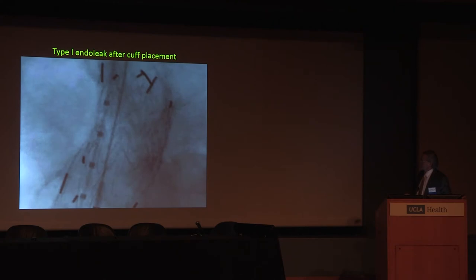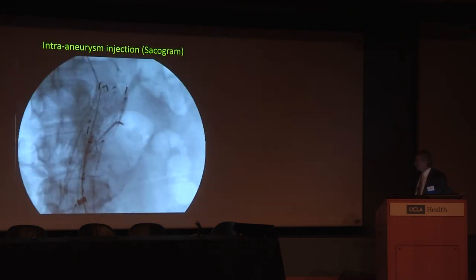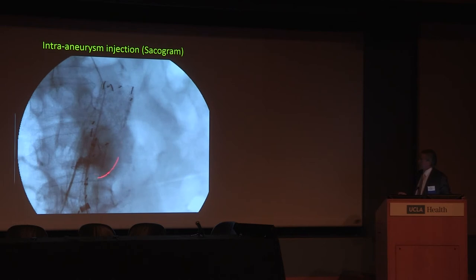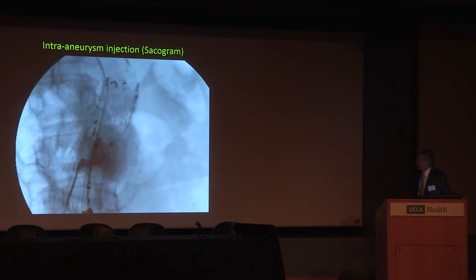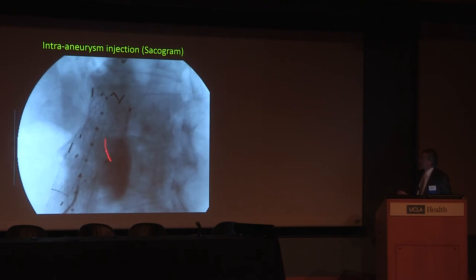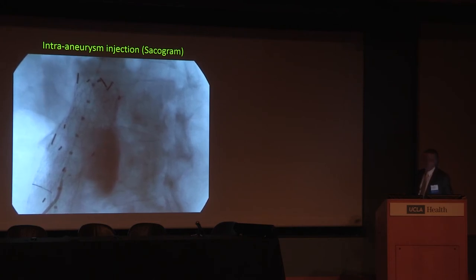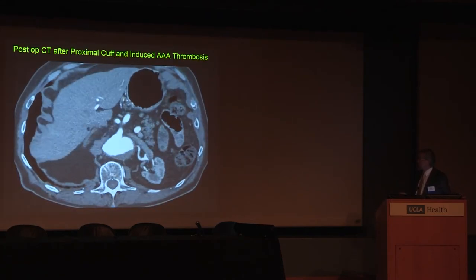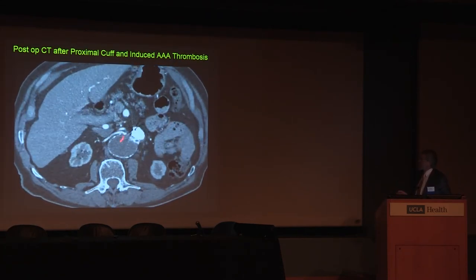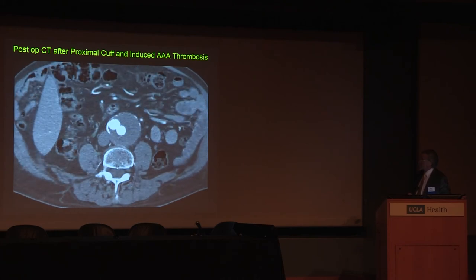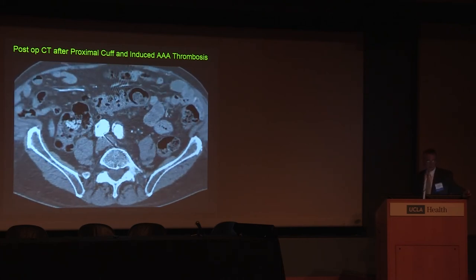What we did in this case was access the sac outside of the device between the iliac and the artery, then injected a slurry of thrombin and gelfoam to induce thrombosis. On the repeat angiogram, the injected thrombin and gelfoam is staying in the sac. We add some contrast to the slurry so we can see it as we inject. On follow-up, the infrarenal component is now thrombosed after the cuff and induced thrombosis.